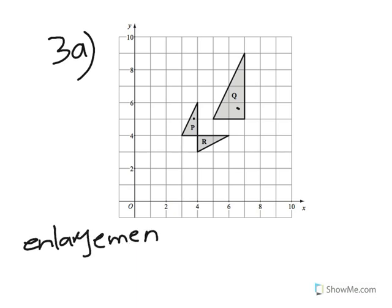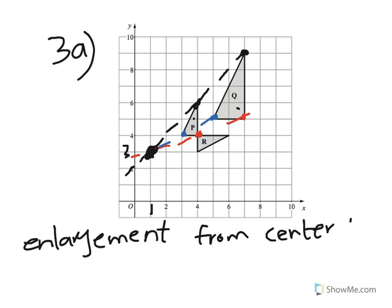With enlargement, you have to decide two things: the scale factor and the center of enlargement. To find the center, take corresponding points on the two triangles, draw a line straight through each pair and extend them. The place where all lines meet is the center of enlargement — in this case that's the point (1, 3). So: enlargement from center (1, 3).